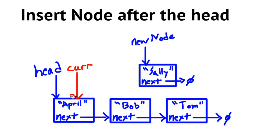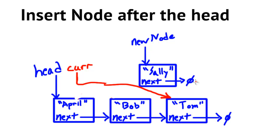Current now points to Bob. We do another comparison: does Sally come after Bob? Yes, S comes after B, so we update current again. Now current is pointing to Tom's node. We see that T comes after S, so Sally needs to go between Bob and Tom.